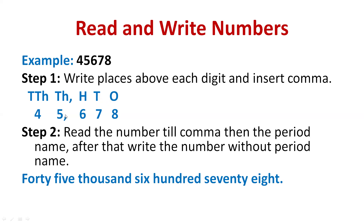After that, put the comma to separate the periods — ones, tens, hundreds — then comma — thousands, ten thousands. Now read the number up to the comma, which is forty-five. Then instead of the comma, write the period name. So the full number is: forty-five thousand six hundred seventy-eight. We do not say the ones period name because we already know those three members belong to the ones period.